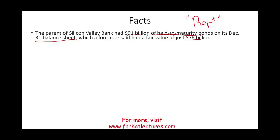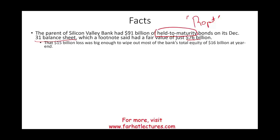The $15 billion of losses were clearly visible in the footnotes — our held-to-maturity bonds were paid for at $91 billion and worth $76 billion. They were not booked, not accrued, not recorded, because they were classified as held to maturity. And that $15 billion was large enough to wipe out the bank's total equity, which happened to be $16 billion.